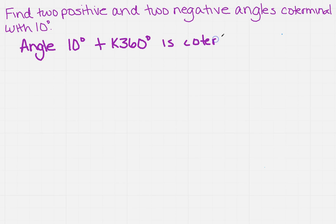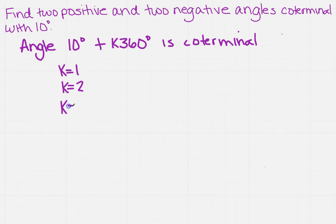I just want to write that down as a reminder for what we're going to be doing. The easiest thing to do is use k equals 1 and k equals 2 for the positive angles, and k equals negative 1 and k equals negative 2 for the negative angles. Remember, you want to pick the smallest integers that you can because you don't want it to be extremely difficult to solve.